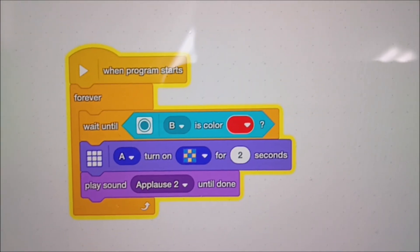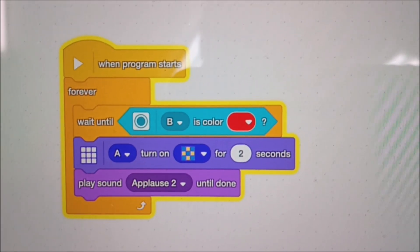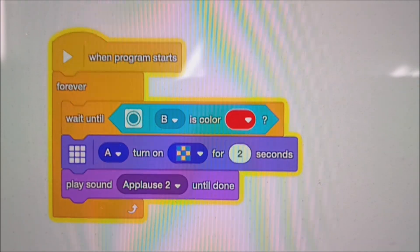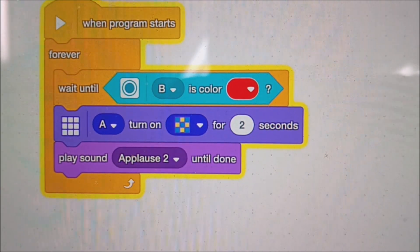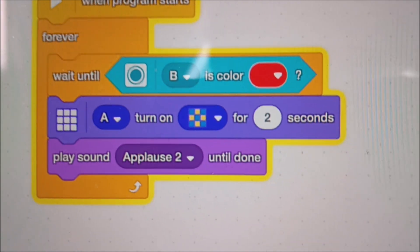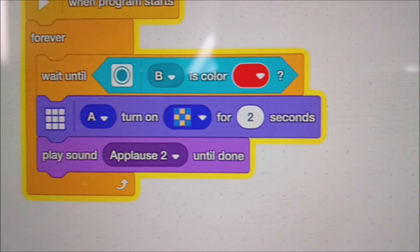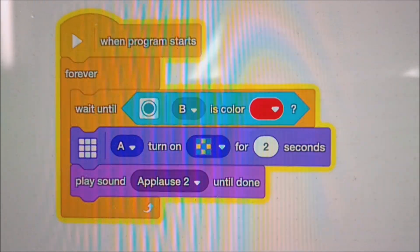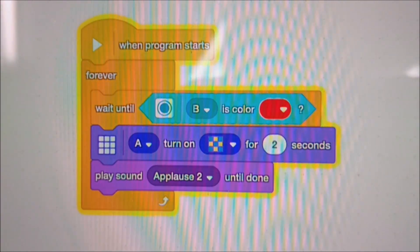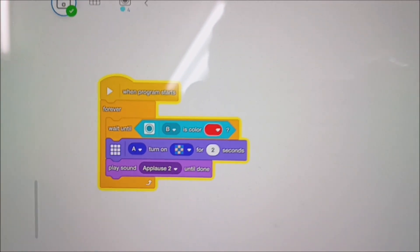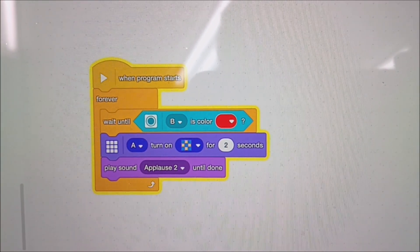Okay, so here's the program. I put it on a forever loop. I did a wait until the color sensor sees red. I put on the light matrix for that particular pattern for two seconds, and then I had it play the applause too. So let's go ahead now and see that in action.